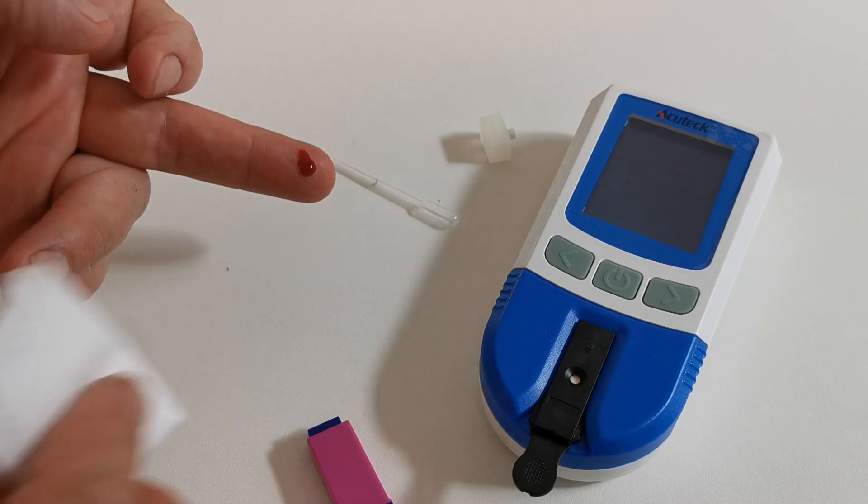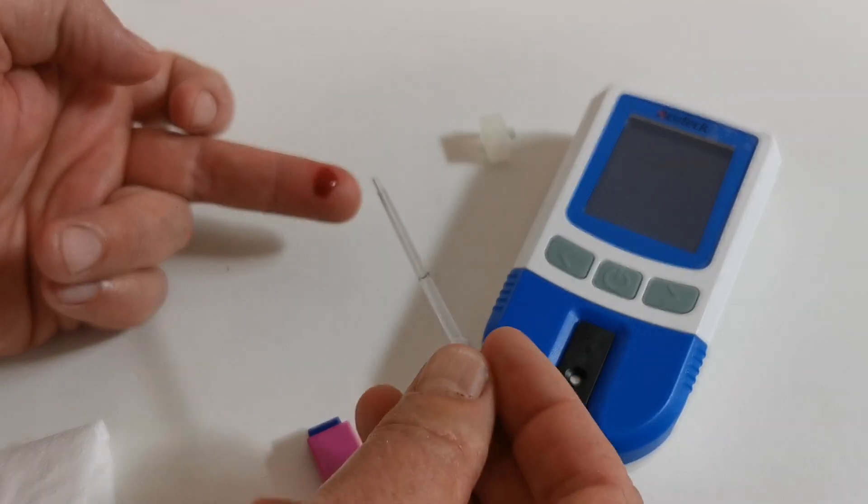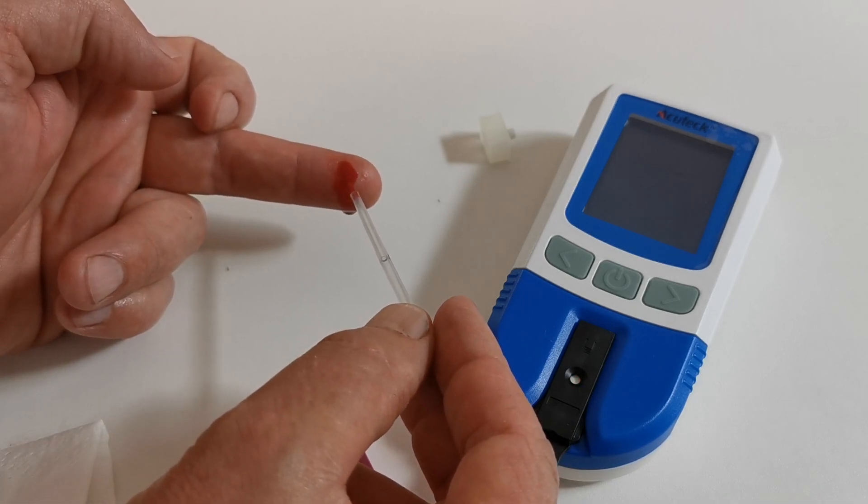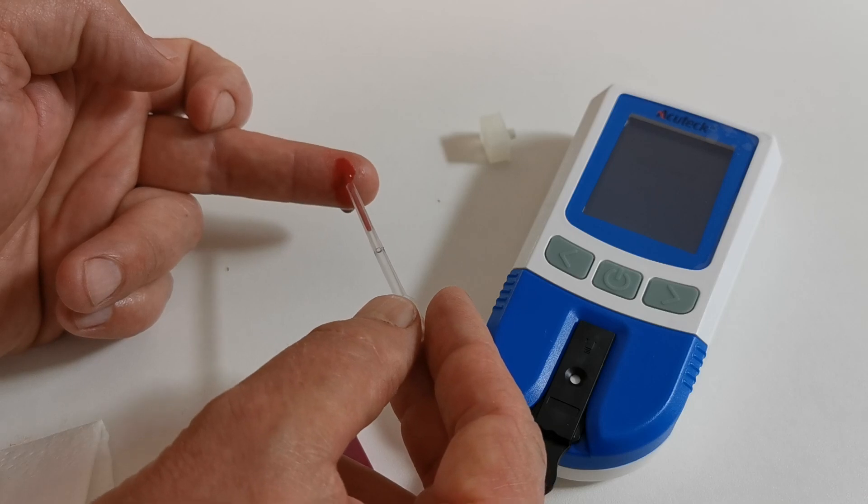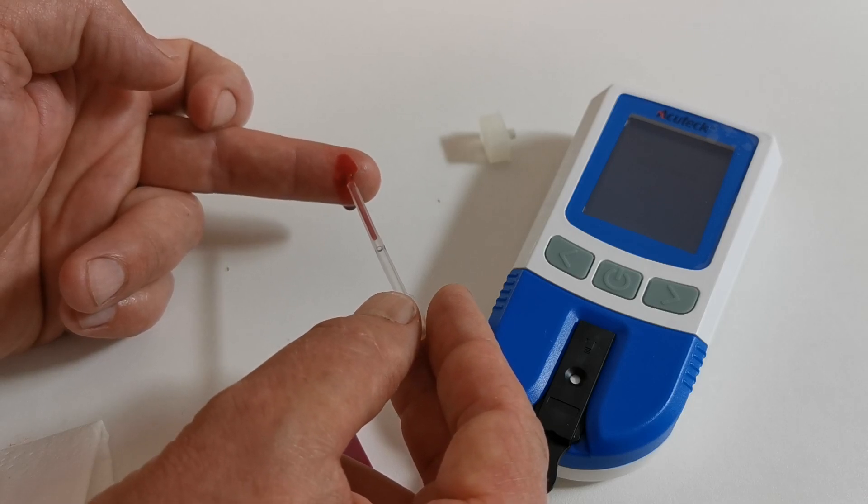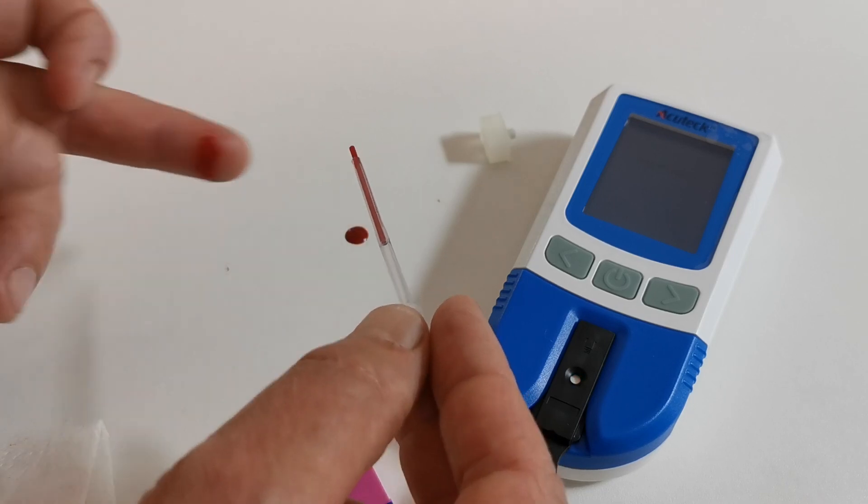The first droplet will form naturally. Wipe it away. The second droplet will form very quickly. Use the pipette, placing it into the blood sample. You're not squeezing the pipette bulb at all. It will naturally feed itself along until it reaches that black line, which is the indicator of the blood volume required.